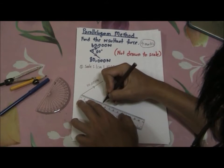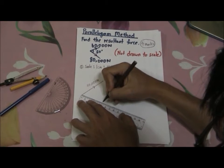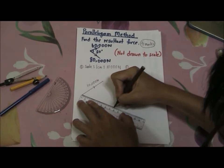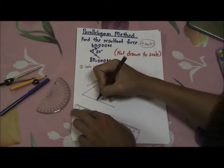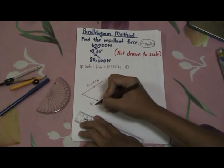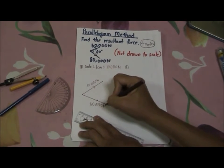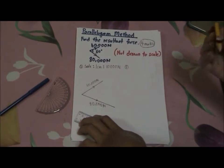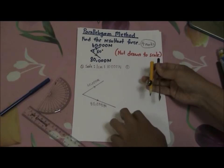Let's draw 8 cm. This will be our 80,000 newton force. Now I'm going to teach you a very accurate way to actually draw the parallelogram.